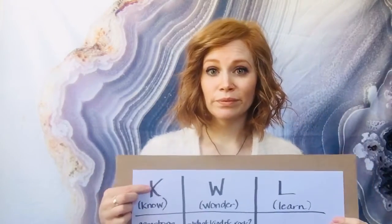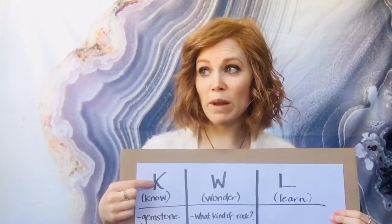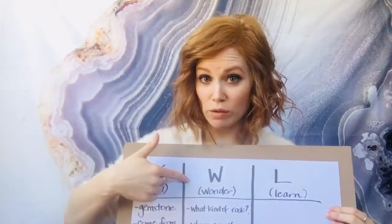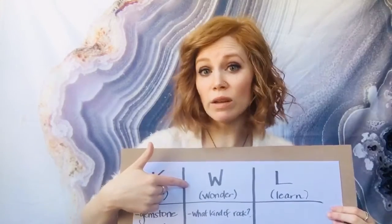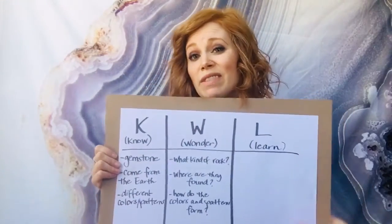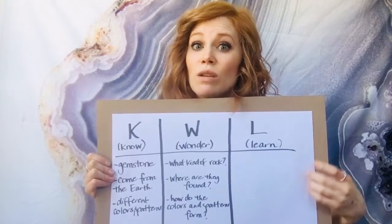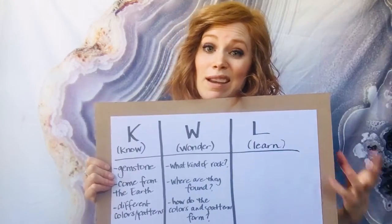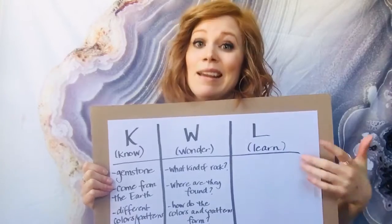Before I set out on my mission to find all of this information, I'm going to try to organize my thoughts with something called a KWL chart. K stands for what you know already — information that's just in your brain. W stands for what you wonder, or what you want to find out. And L stands for what you learn. I've started mine but left the L blank, because I have yet to learn — I still have to do my research before I can fill in the L.